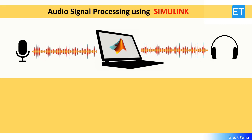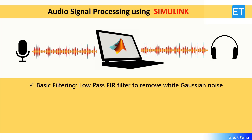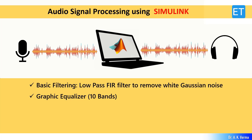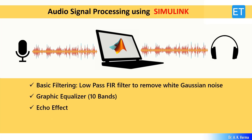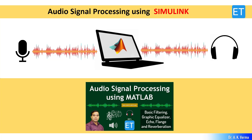Let's start this video. First, let me show you the contents. I will implement a low-pass FIR filter to remove white Gaussian noise present in an audio signal. Then I will show you how to implement a graphic equalizer for 10 frequencies, which can give various sound effects such as pop, rock, jazz, vocal, and metal. We will also implement echo effect, flange effect, and reverb effect in Simulink. I recommend you watch my previous video — linked in the description — where I implemented all these effects using MATLAB instead of Simulink.